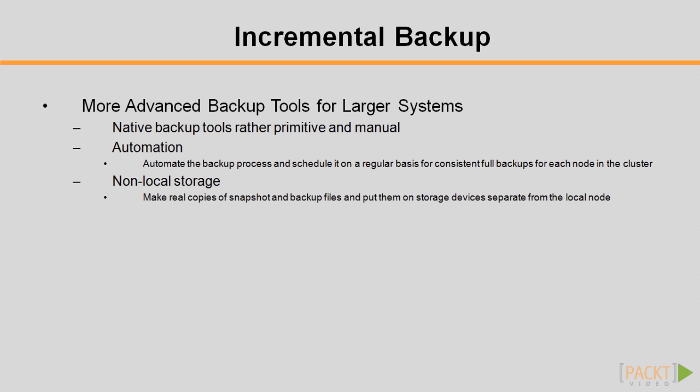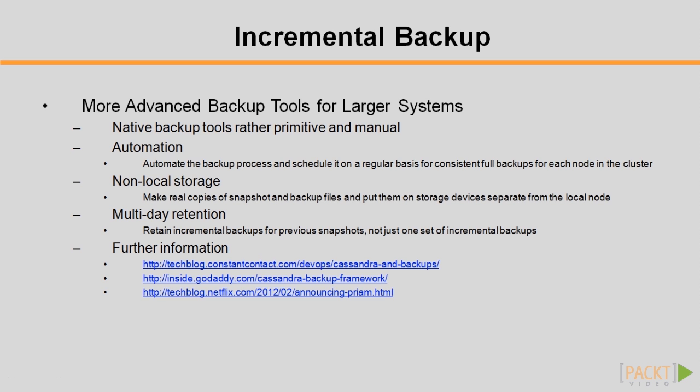The hard links are created locally, which doesn't account for any potential problems with the local disk. We may need to make real copies of snapshot and backup files and put them on off-site storage. In addition, Cassandra only retains one set of incremental backup, which limits the flexibility of retaining incremental backups for previous snapshots. Some Cassandra users have made solutions to tackle these problems — you may visit the provided URLs for further references.